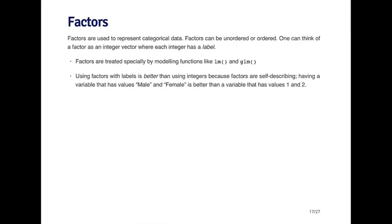A factor is a special type of vector used to represent categorical data. There are two types of factors: unordered and ordered. Unordered factors store data with labels that are categorical but have no ordering — for example, male and female. Ordered factors represent things that are ranked but not numerical, like assistant professor, associate professor, and full professor, which are categorical but ordered.